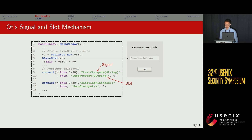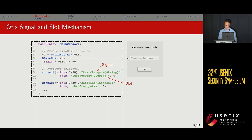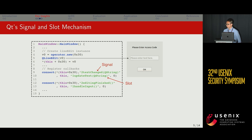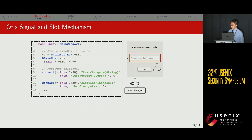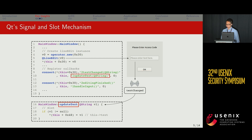Using one as an example: the first two parameters of the connect function indicate a signal, which is essentially an event triggered by UI transactions. In this example, the signal is called textChanged. The next two parameters indicate the slot, which is essentially the callback handler for the generated signal. In this example, the slot is called updateText. So whenever a user modifies the text within the UI, a signal called textChanged will be injected, which will invoke the slot function updateText to automatically assign the user input variable to a class attribute.